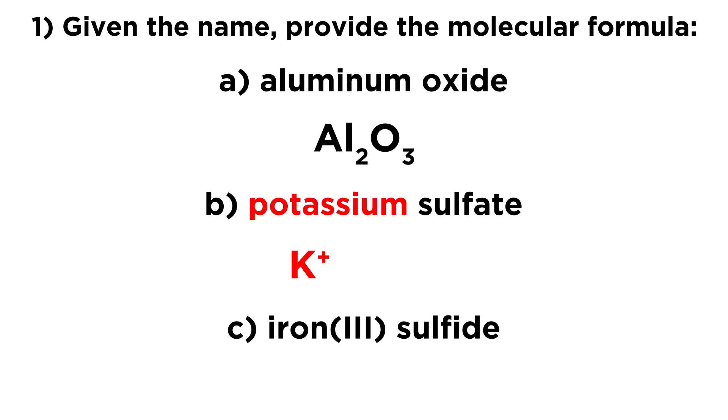Now how about sulfate? Sulfate is a polyatomic ion. It is SO4 two minus, and that's just something we kind of have to know. We're going to have to memorize some of these polyatomic ions. So sulfate is SO4 with a two minus charge.